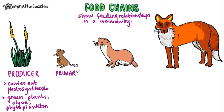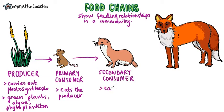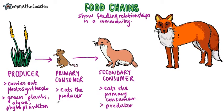Primary consumers eat producers. Here the field mouse will eat the grass. Secondary consumers then eat the primary consumers — this weasel will hunt and eat the mice. Because it kills other organisms to feed from, we call it a predator. We then call the mice the prey.